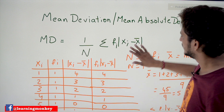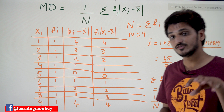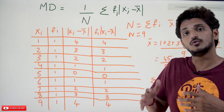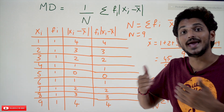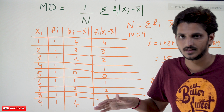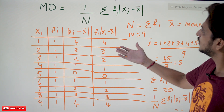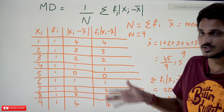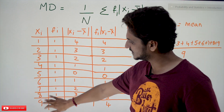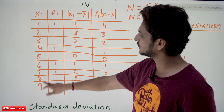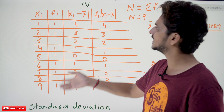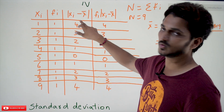As discussed in previous classes, measure of dispersion is a measure to find how our data is spread based on the mean. That is the key point: based on the mean, how is our data dispersed? For our example, Xᵢ values are 1, 2, 3, 4, 5, 6, 7, 8, 9 and all frequencies are 1, so there is no frequency distribution in our data set.